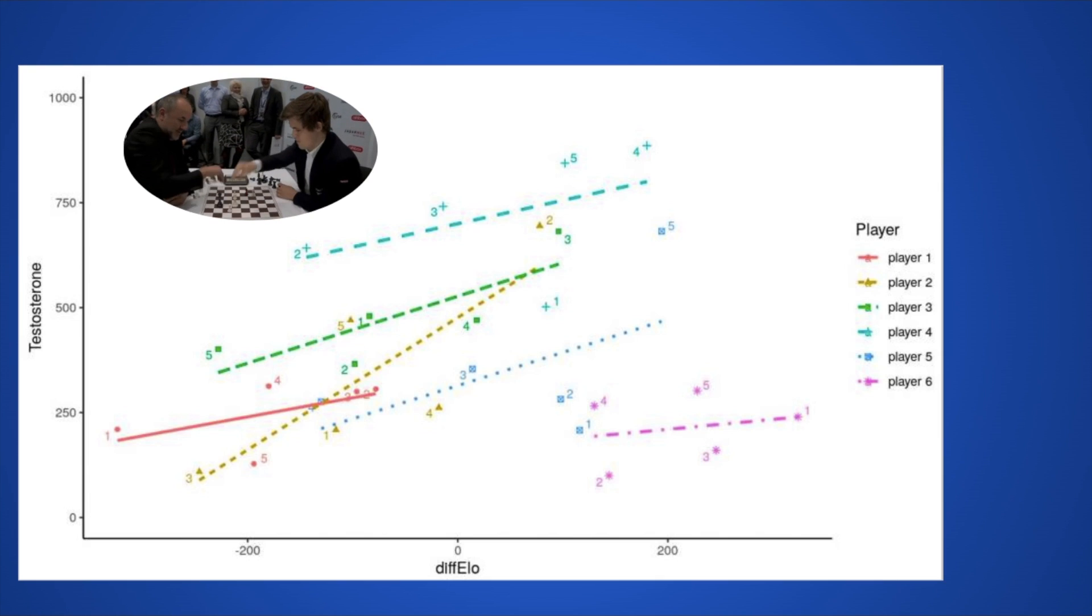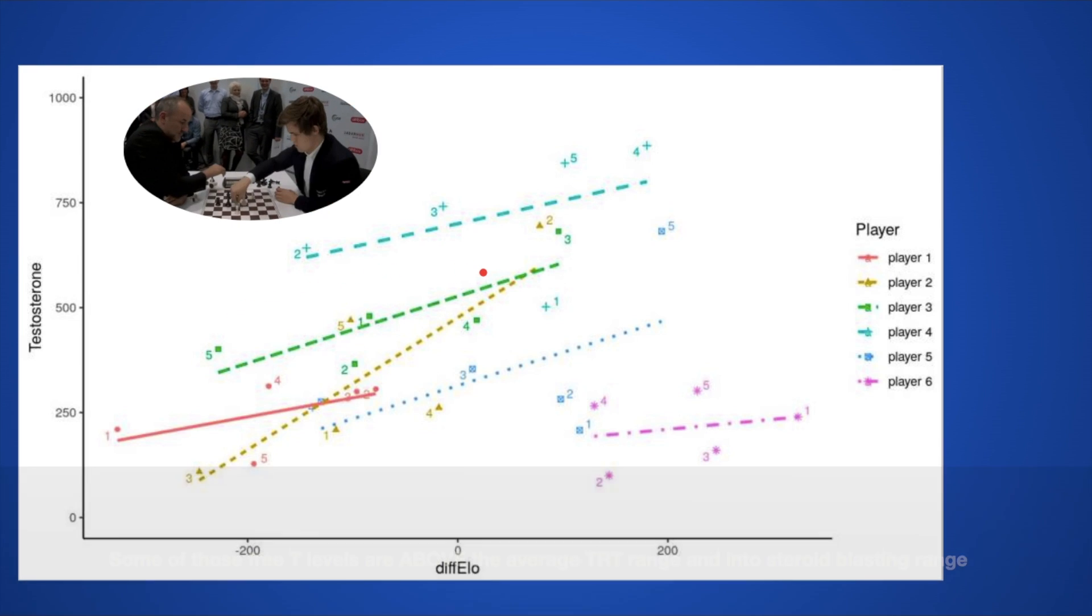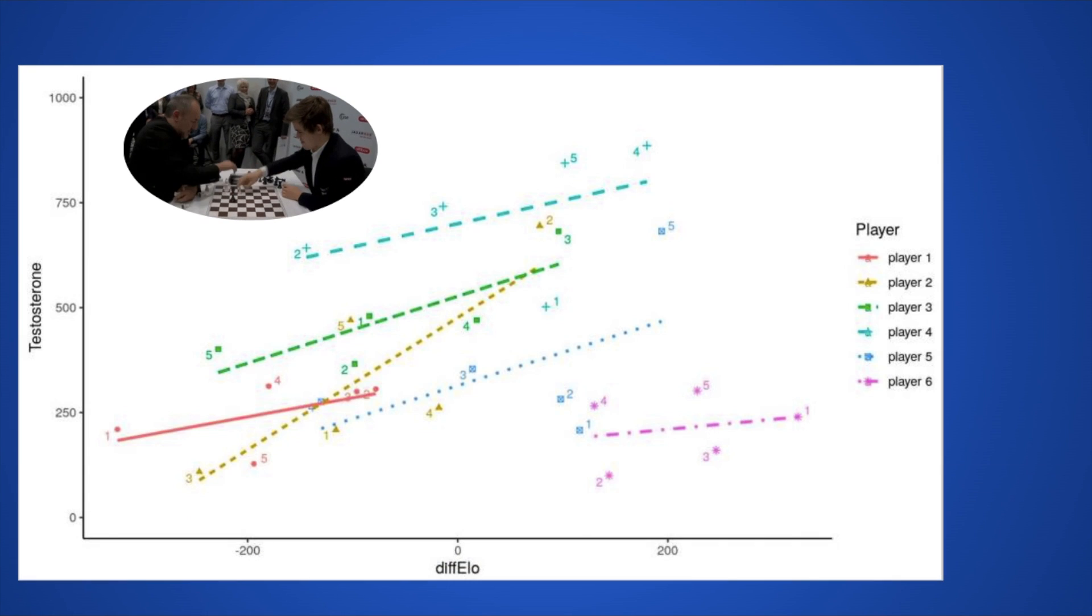So to put in perspective, the average person's free testosterone levels are down here, around 100 maybe 150 picograms per milliliter if the person is very disciplined with their diet. It could go up into the 200 or 300 range if they're disciplined with their diet, training, and lifestyle and stuff like that. And look how high, I mean, these are TRT-level type of free testosterone levels.